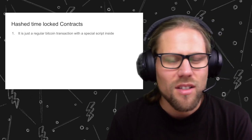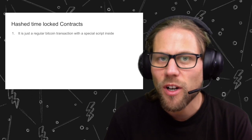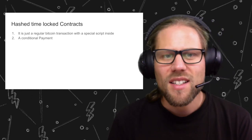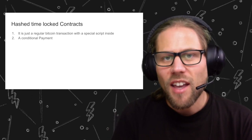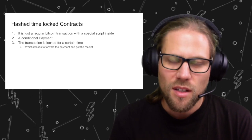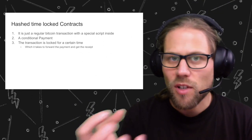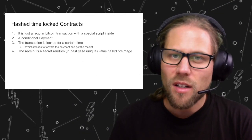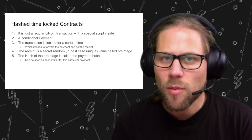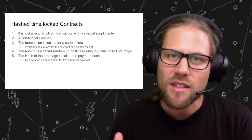Hash time-locked contracts are just a regular Bitcoin transaction with a special script inside — it's a conditional payment. In the same way the contract was formulated — if you provide me with something, I'll pay you — this transaction is locked for a certain amount of time. It says: you have to claim this within the next day. The receipt here is a secret, random, ideally unique string that Lightning developers call the pre-image. People on the Lightning Network provide the hash of the pre-image to the payer, and this payment hash is part of the invoice — it serves as an identifier for the payment.